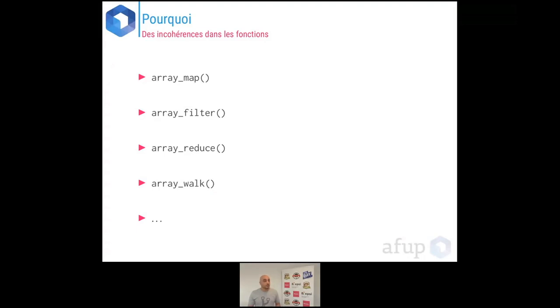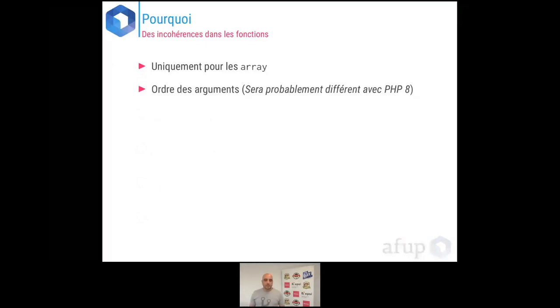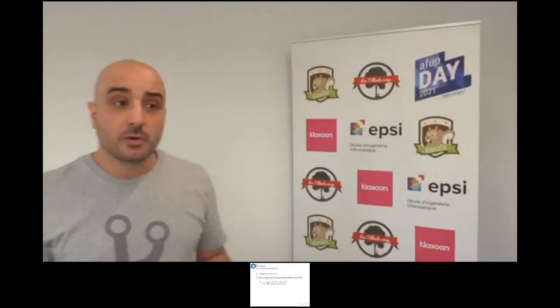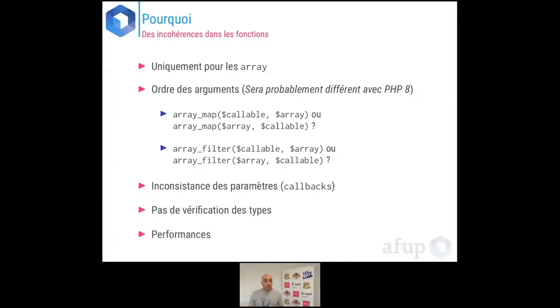Ces incohérences : ces fonctions ne fonctionnent que pour les arrays, alors qu'en PHP nous avons plusieurs structures itérables. L'ordre des arguments est toujours problématique — lorsqu'on utilise array_map, on ne sait jamais si le callable vient avant ou après l'array. Il y a aussi une inconsistance des paramètres passés aux callbacks, et très peu de vérification des types.